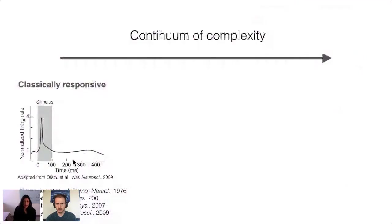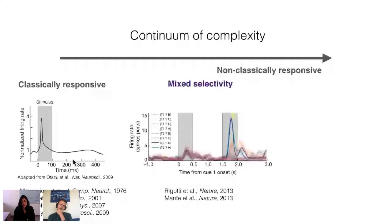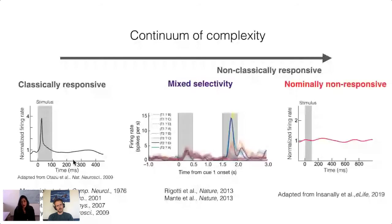Systems neuroscience is finally in a position to confront this question. If we consider cells along a continuum of increasing complexity: in addition to classically responsive cells, there are cells that exhibit mixed selectivity — individual cells modulated by multiple task parameters. Work from Stefano Fusi's group has demonstrated that mixed selectivity cells in primate PFC have computational advantages necessary for flexible behavior. On the extreme end are non-responsive cells so variable they fail to demonstrate any obvious trial-average relationship to task parameters.